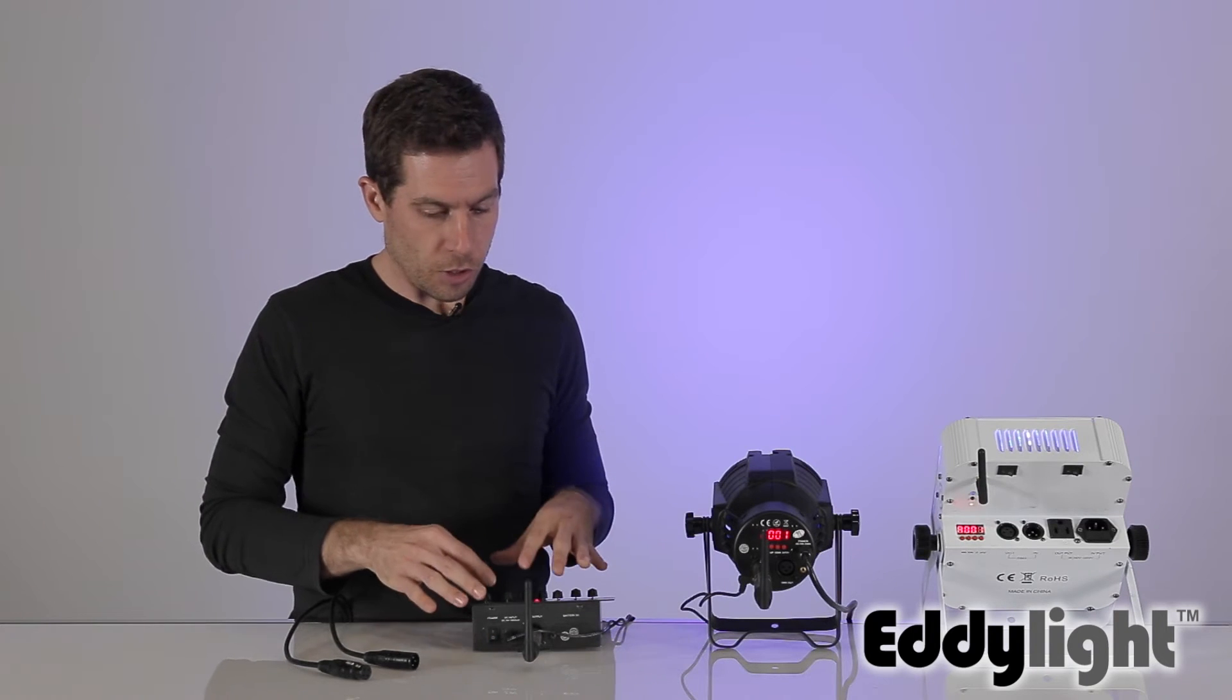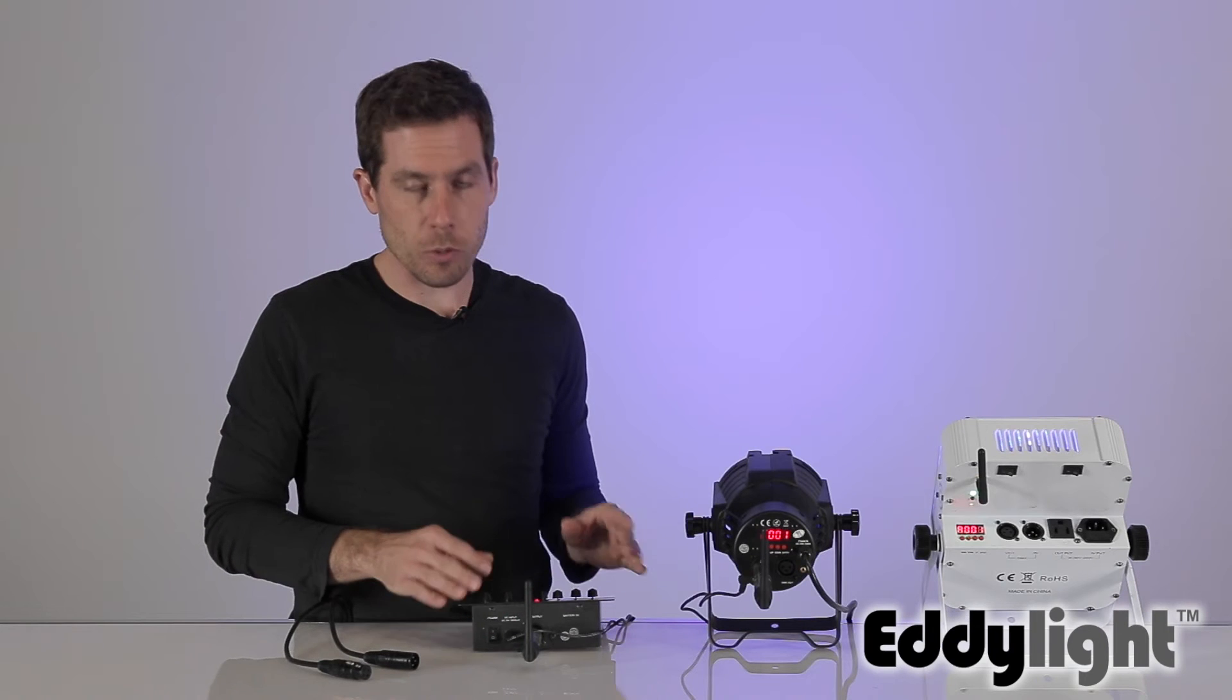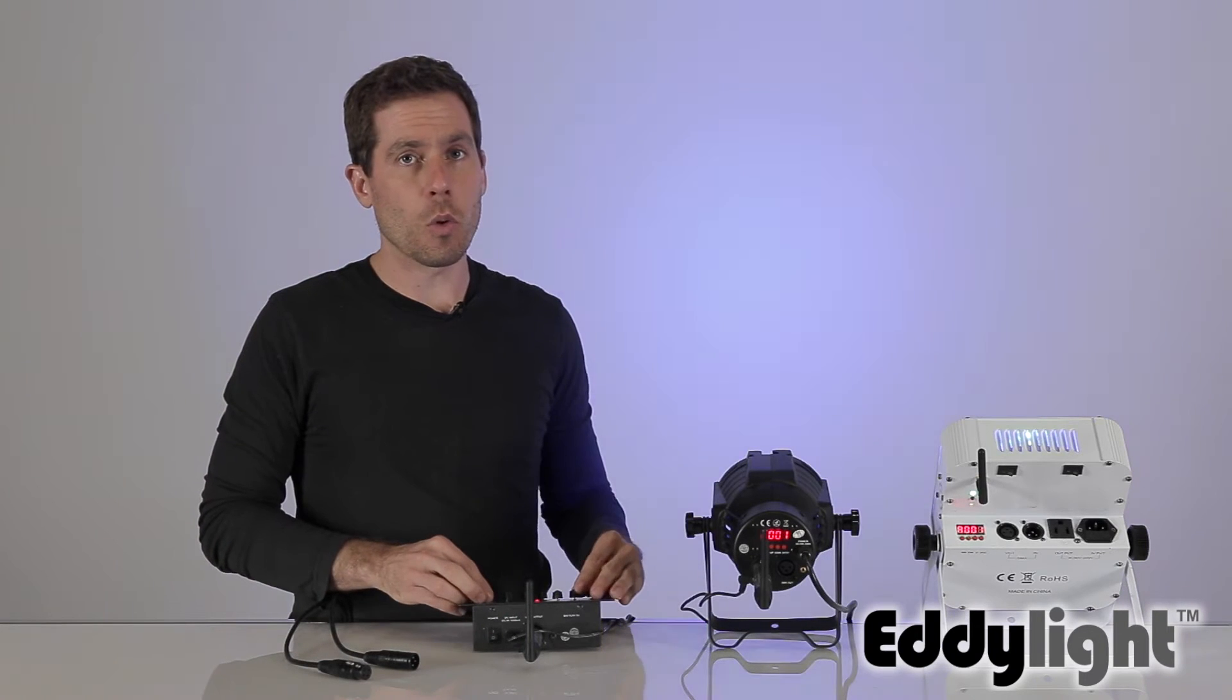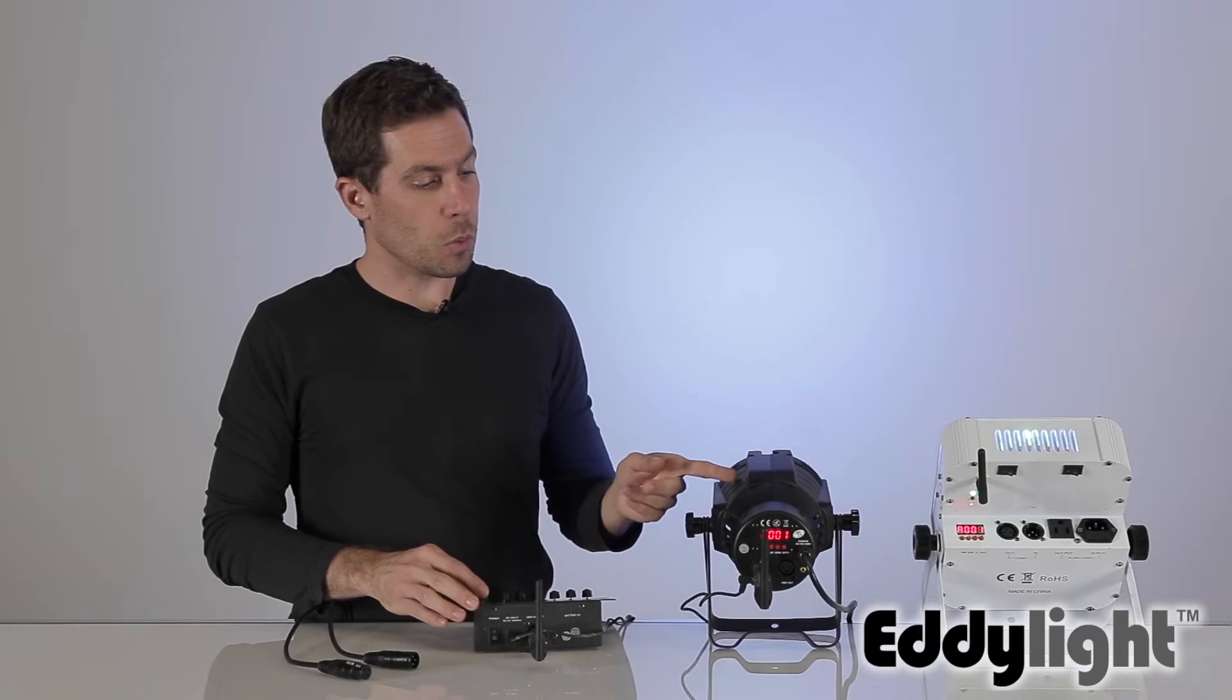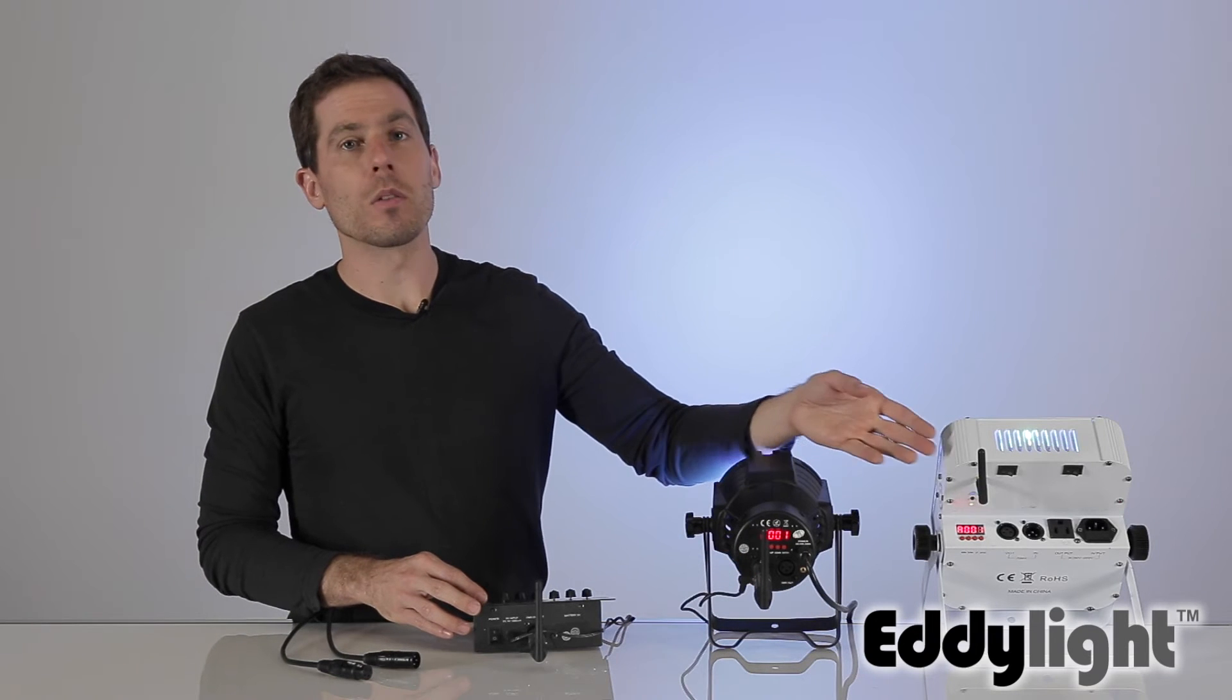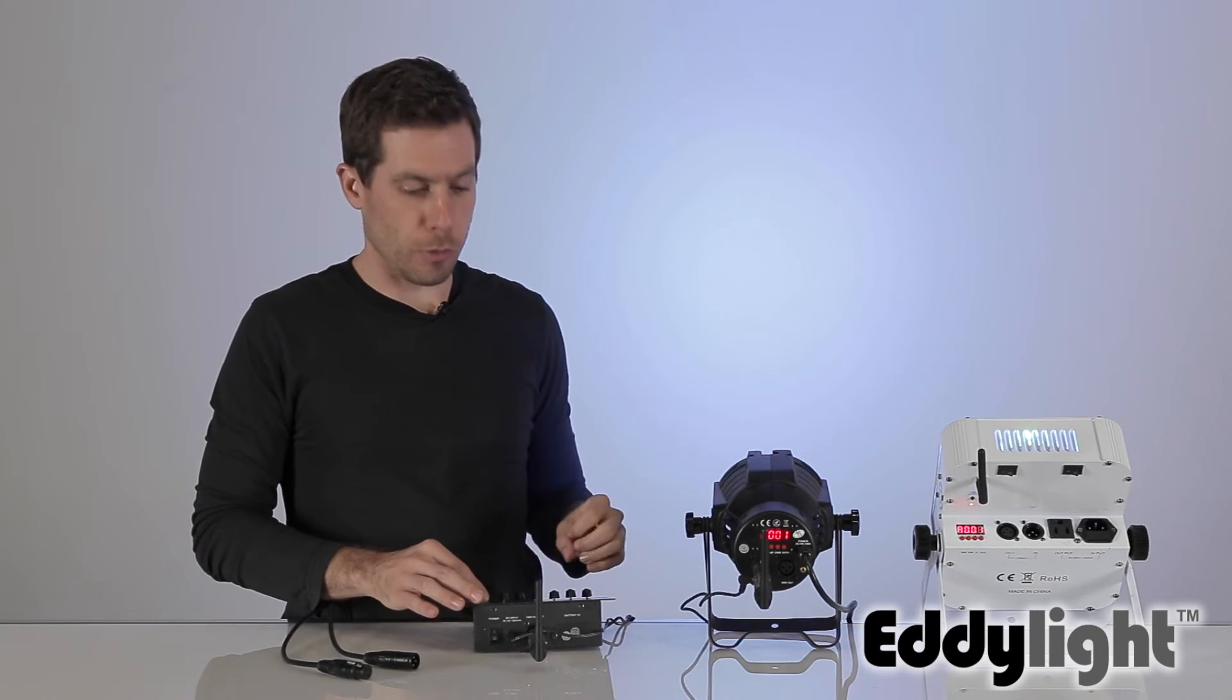So in this setup right here, we've got a transmitter connected to our DMX board, and I can control both of the lights, this one with the receiver plugged into it, and this one with the receiver built into the unit.